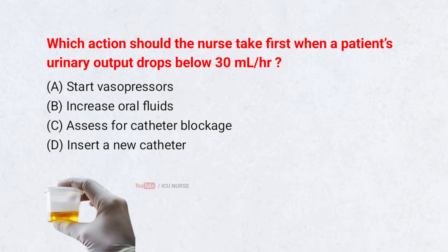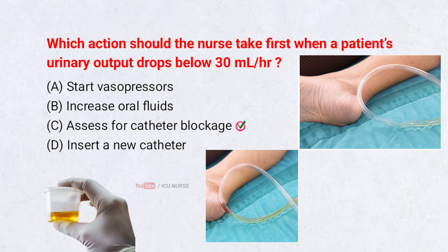Which action should the nurse take first when a patient's urinary output drops below 30 ml per hour? A. Start vasopressors. B. Increase oral fluids. C. Assess for catheter blockage. D. Insert a new catheter. Correct answer: C. Assess for catheter blockage. Low urinary output may simply be due to a catheter kink or obstruction — checking and clearing it is the most immediate nursing action.